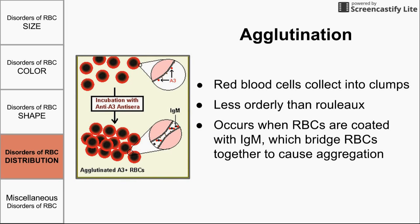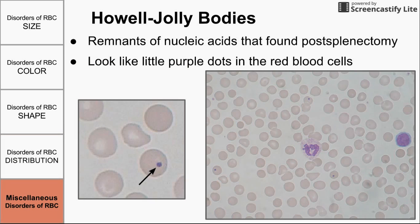Agglutination is similar to rouleau but much less orderly. This is when a bunch of red blood cells form big aggregates, coming together and overlapping all over the place — collecting in clumps that look very disorderly, not in a straight line like rouleau. Agglutination occurs when red blood cells are coated with IgM, which is a pentameric antibody with five binding sites. Its large size allows it to bridge red blood cells together and cause this aggregation.